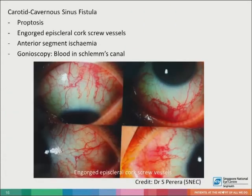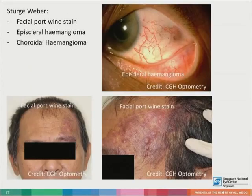The raised episcleral venous pressure in carotid-cavernous sinus fistula leads to blood in Schlemm's canal, observable on gonioscopy. More obvious features of congestion include proptosis, engorged episcleral corkscrew vessels, and pulsatile readings on Goldmann applanation tonometry. Glaucoma is commonly associated with phacomatoses, including Sturge-Weber syndrome, with patients having a facial port wine stain, episcleral hemangioma, and choroidal hemangioma.